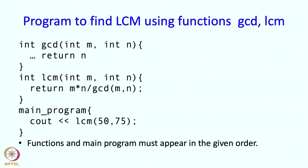Your code should look something like this. First in your file you should have the GCD program, then you should have the LCM program. The GCD program will return N eventually, and LCM will return its result. Then the main program makes a call on LCM, which in turn makes a call on GCD.